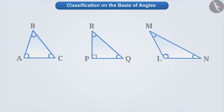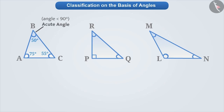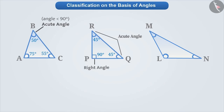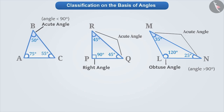Now, let's learn how to classify triangles on the basis of angles. Here, three triangles are given. Can you find any difference by looking at their angles? If we look at triangle ABC, then all its angles are acute angles. If we look at triangle PQR, then it has two acute angles but one right angle. Similarly, in triangle LMN, we can see that there are two acute angles but one obtuse angle.